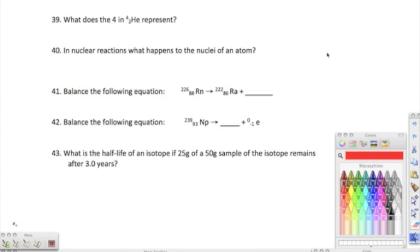Moving on to 39. It says, what does the 4 in 4, 2, HE represent? We know that the 4 is going to represent the mass number. Remember, the mass number is the number of protons and neutrons in an atom. And then the 2 represents the atomic number. The atomic number is how everything on the periodic table is organized. If we need to know what element it is, we look at the atomic number, look on the periodic table, and it tells us. If we need to know what isotope it is, we look at the mass number, and that's going to tell us what isotope.